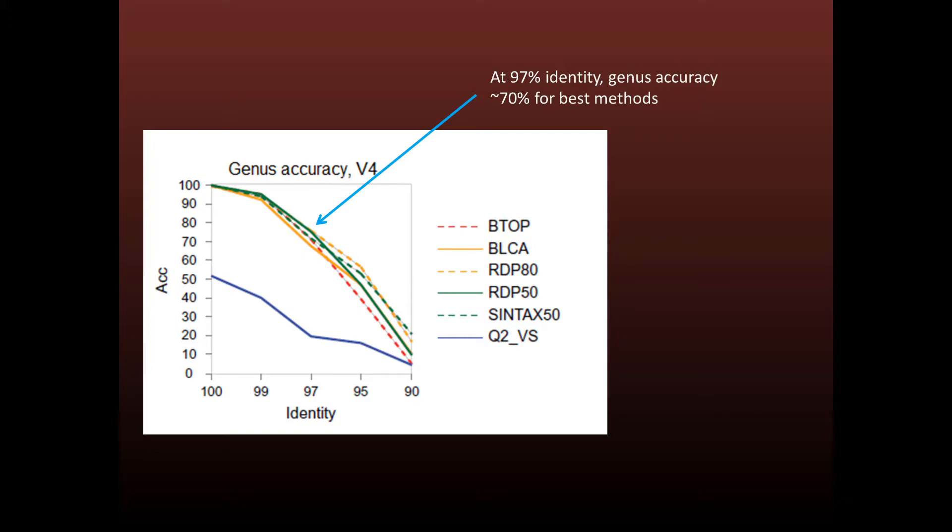At 97% identity, the accuracy has already fallen to around 70% for the better methods in this test. At 95% identity, the genus accuracy has dropped to around 50%. We can also see that the QIIME version 2 method has much lower accuracy than the other methods shown here.